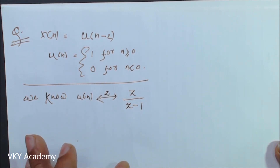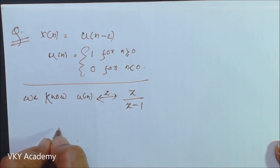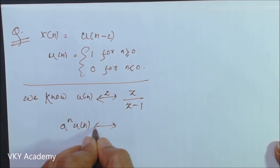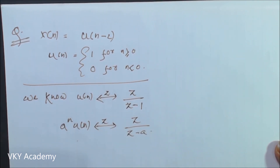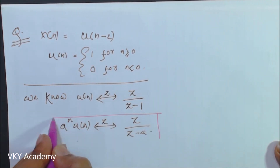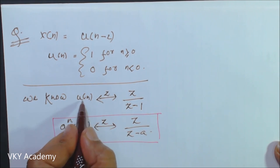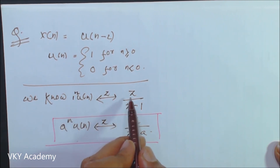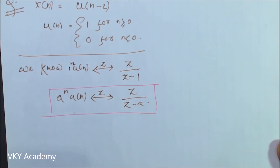This was already discussed in our previous class on Z transform, where we proved that a to the power n times u of n has the Z transform equal to z upon z minus a. Using the same method, u of n can be written as 1 to the power n times u of n, and its Z transform is z upon z minus 1. So what will be the Z transform of u of n minus 2?